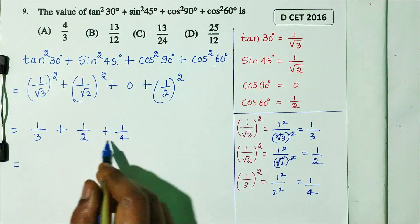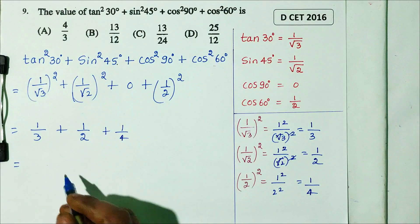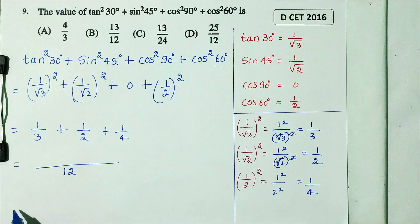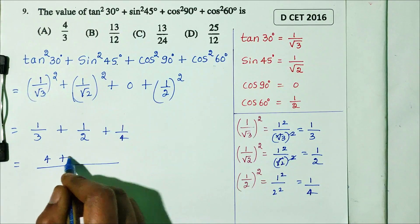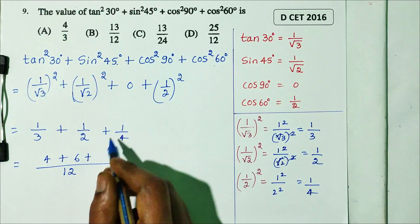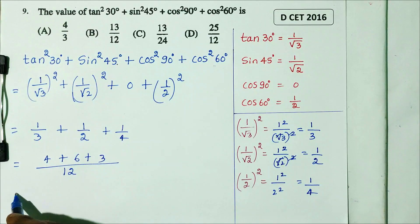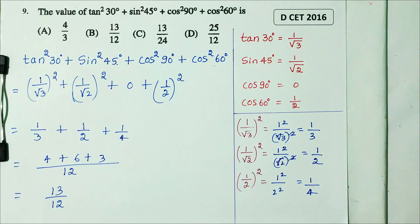Now find the LCM of 3, 2, and 4, which is 12. So: 4 times 1 is 4, plus 6 times 1 is 6, plus 3 times 1 is 3, all over 12. That gives 4 plus 6 plus 3 equals 13, divided by 12.